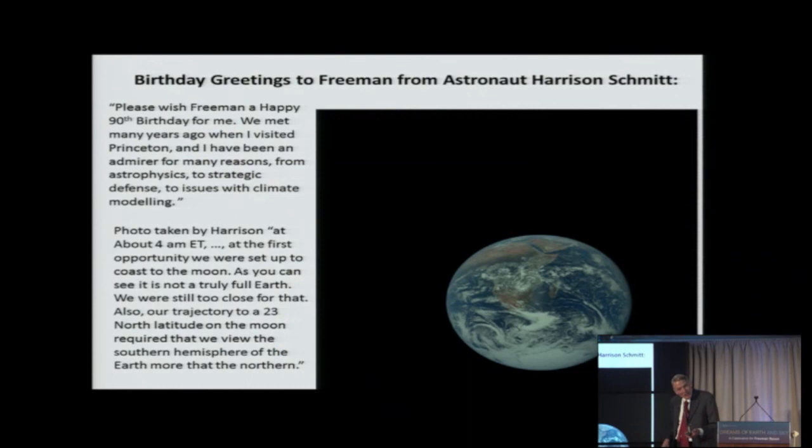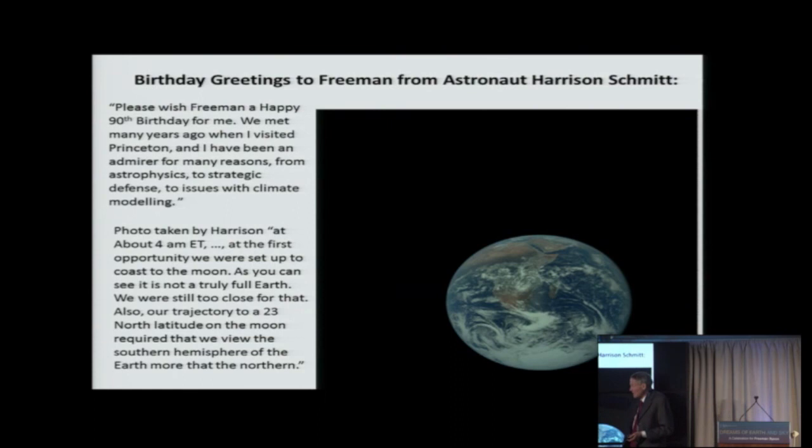All right. Well, when I was preparing this, I was trying to find who had actually taken the photograph. So one of Freeman's friends, one of mine too, I'm glad to say is the astronaut Harrison Schmidt, who, after retiring from being an astronaut, was senator from New Mexico for a while. And when I was corresponding with him, he said, please wish Freeman a happy 90th birthday for me. We met many years ago when I visited Princeton. I've been an admirer for many reasons, from astrophysics to strategic defense to issues with climate modeling. And then we got to talking about this photograph. He said, this is the photograph I took. It's from my camera. So this is directly from his camera.